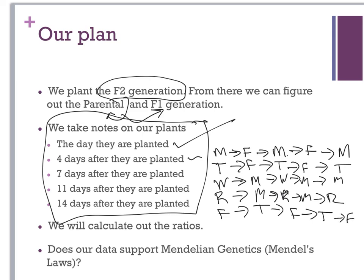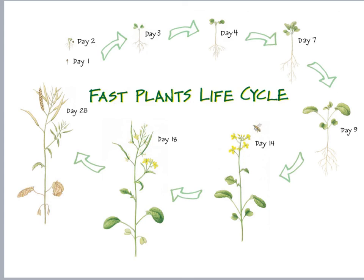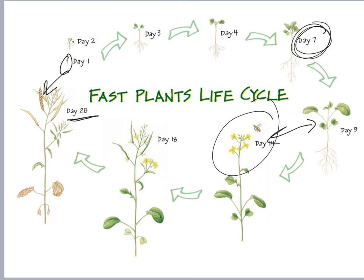We'll calculate our ratios and look to see if we have data that supports Mendelian law. We're looking at fast plants, Brassica rapa, which you read about. The reason we're using these is that they go from seed to seed in 28 days — a really fast life cycle, so you can get lots of data very quickly. We're only growing them up until around day nine to fourteen; I want you to see them flower. They have very pretty flowers, but phenotypes should be visible around day seven. If you have any questions about your notebook, planting, or color, please let me know. Make sure you're taking lots of pictures. Good luck, everybody.